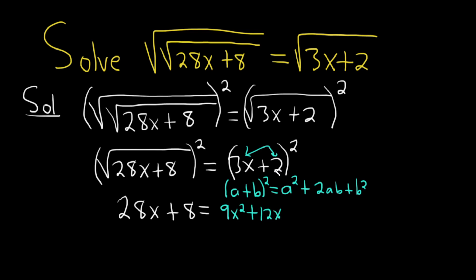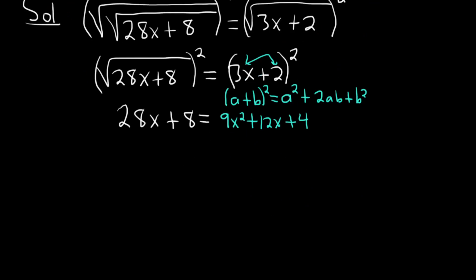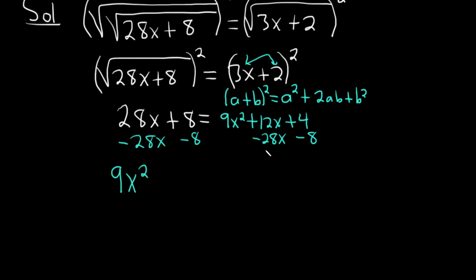So you're doubling it: 6x times 2 is 12x. And then you square the 2, so that's 4. This is getting pretty nasty. So let's set it equal to zero. Subtracting 28x from both sides and subtracting 8 from both sides gives us 9x squared, and 12x minus 28x is minus 16x, and 4 minus 8 is minus 4, equal to 0.